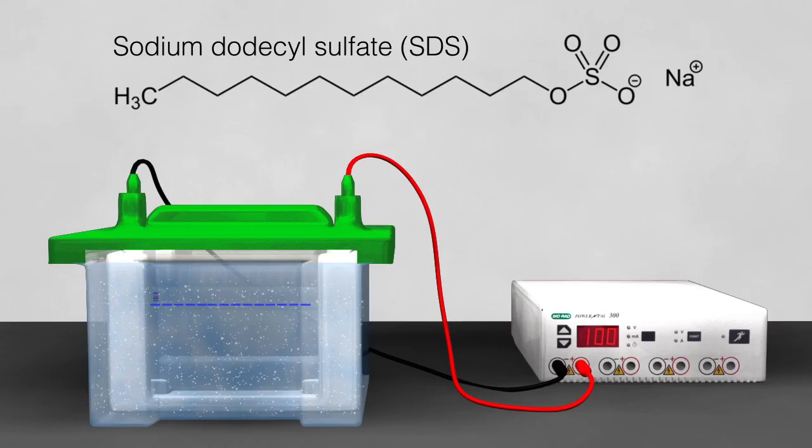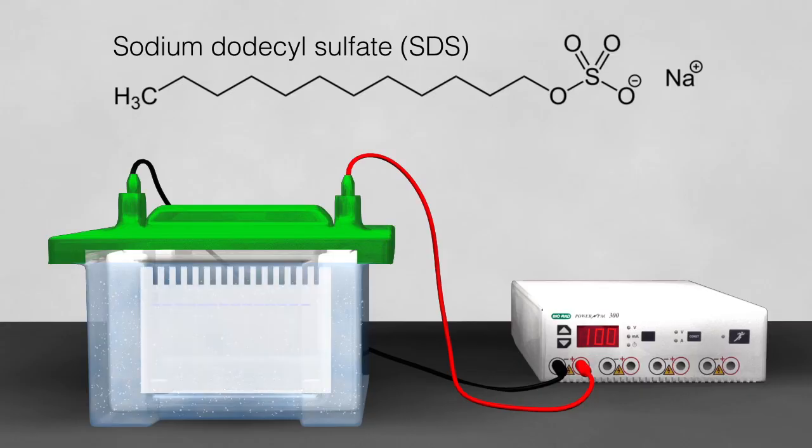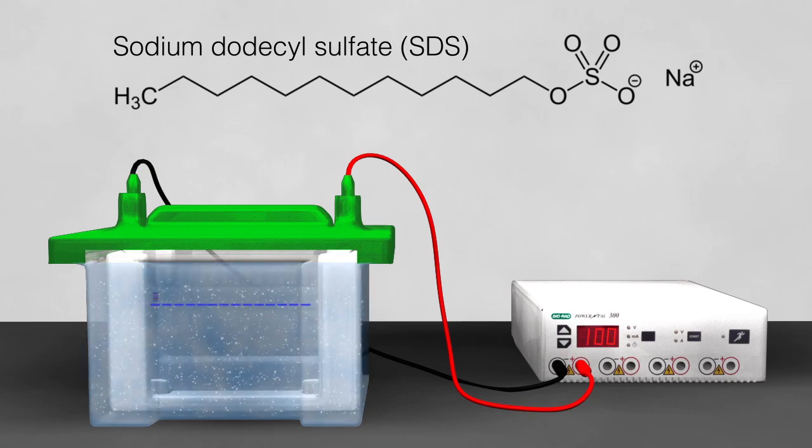During SDS PAGE, SDS is added to the gel solution, protein samples, and running buffer to ensure that proteins remain negatively charged and unfolded throughout the procedure. For the rest of this animation, we will use SDS PAGE to illustrate subsequent steps in the Western blotting procedure.